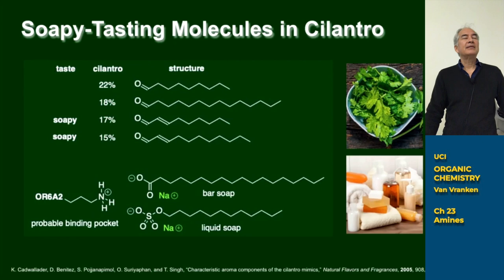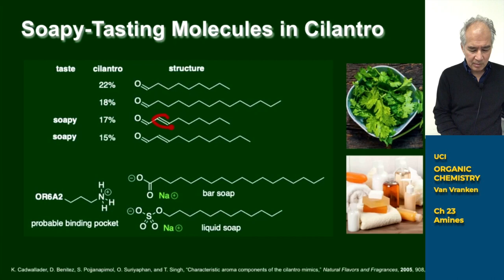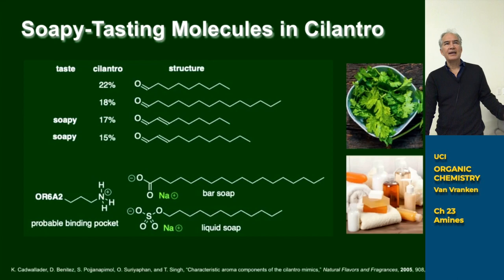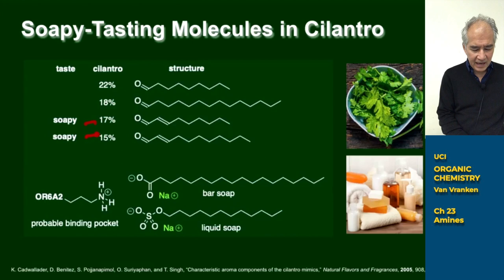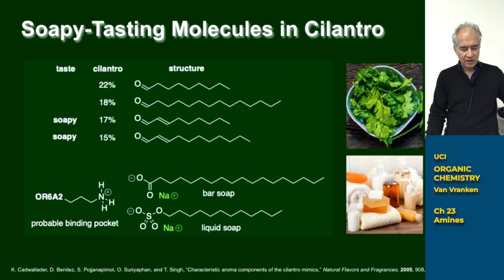But then you also find some unsaturated enals in there — a 10-carbon enal that has the double bond conjugated to the aldehyde, and a 12-carbon enal, dodecanal, that has a double bond conjugated. It's these two molecules that have the double bonds — these alpha-beta unsaturated aldehydes, these enals — that are correlated with the soapy flavor. This was worked out by a group that previously studied the chemistry of small molecules.